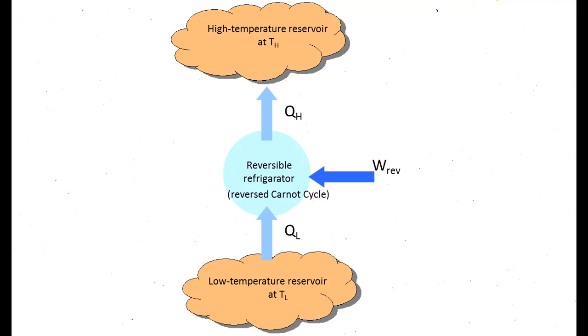Unlike the Carnot heat engine, the Carnot refrigeration cycle undergoes a process with opposite direction. Heat QL is absorbed from the low temperature reservoir TL equals constant, and heat QH is rejected to a high temperature reservoir TH equals constant. A work input in the amount of W is required to achieve this process.